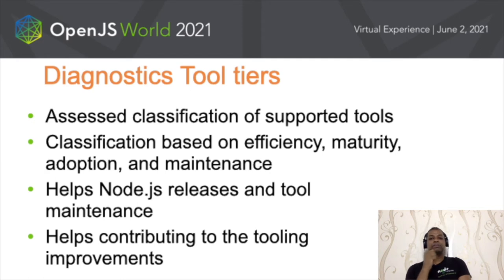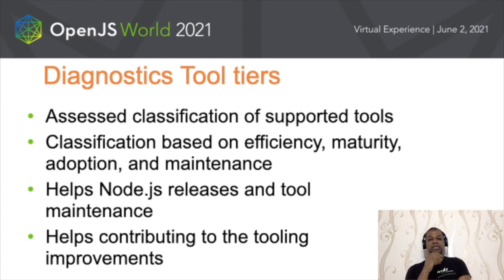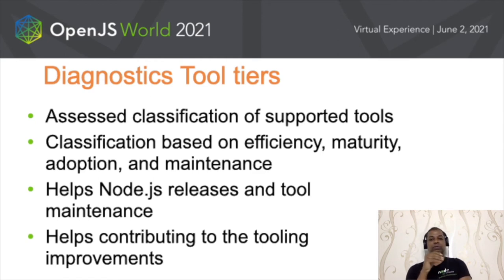It makes a lot of sense to talk about diagnostic tooling tiers in the context of the user experience with Node.js diagnostics. Tooling tiers is simply a classification based on certain value parameters attached to the known set of diagnostic tools — such as how efficient the tool is for a specific use case, the maturity level in terms of stability index, the overall adoption in the user ecosystem, and how well the tool is maintained by its owners. These parameters determine the current tier of each tool.